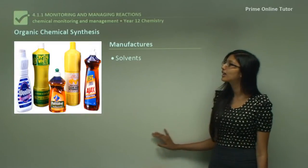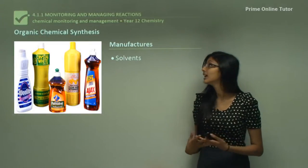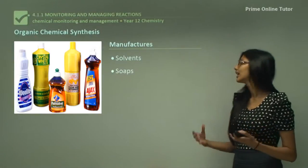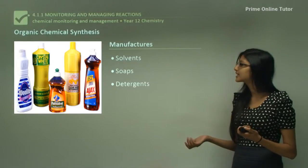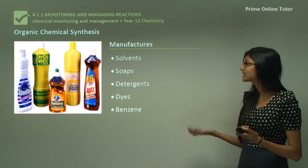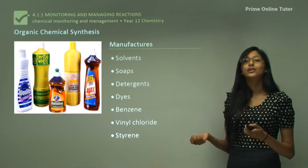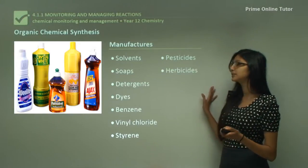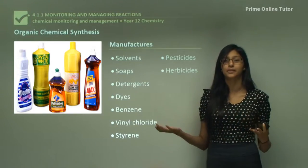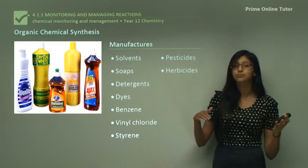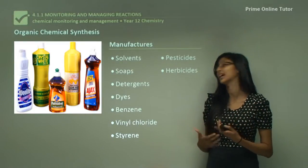So what does our organic chemical synthesis industry do for us? They provide us with solvents, soap that we use to wash our hands, detergents, dyes, benzene, vinyl chloride, styrene, and also pesticides and herbicides which farmers would use to control pests. So you can already see that both of these industries provide very different kinds of products.